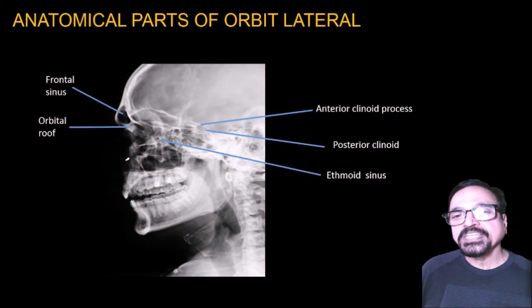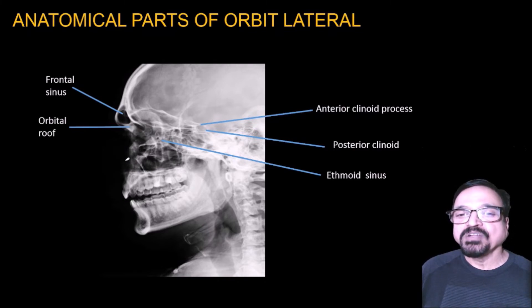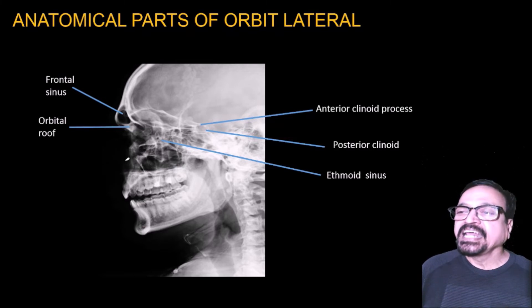What structures do we see? The frontal sinus is seen in lateral view — a fairly nice view for the frontal sinus. Then the orbital roof is visible, which is fairly acceptable anteriorly. The anterior clinoids and posterior clinoids are also well seen.